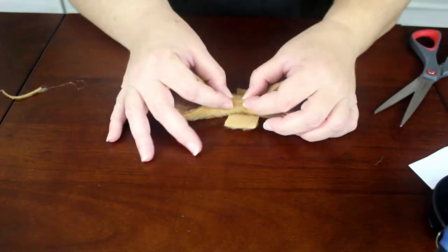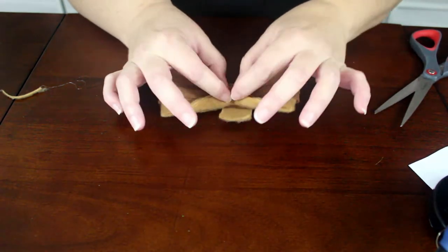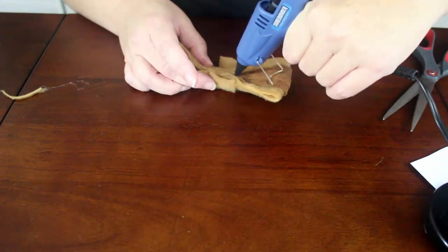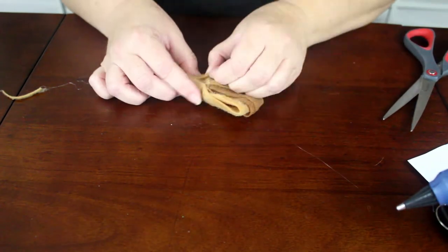Pinch the center of the bow together and glue it. Then glue the small strip around the center. Use a binder clip to hold the middle piece on while the glue cools and hardens.